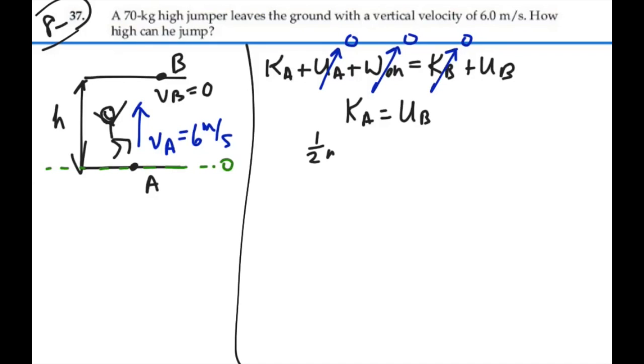One half of the mass times the velocity at A squared will equal the mass times g times the height of B. In fact, the mass will be extraneous because it cancels out here. And our height at B will equal the velocity at A squared divided by 2g.